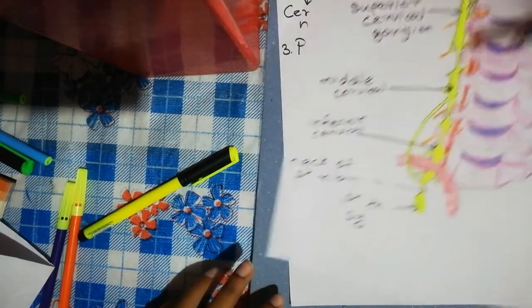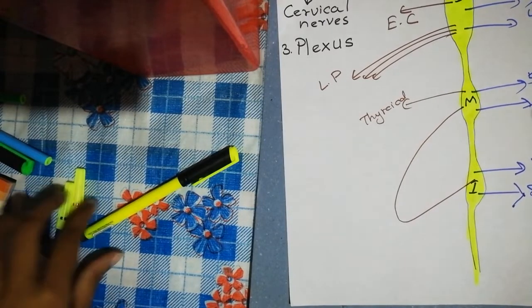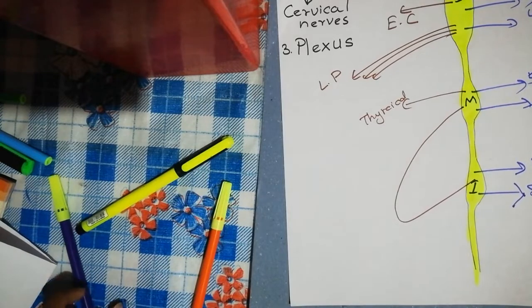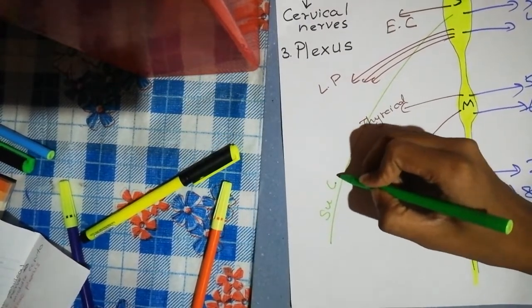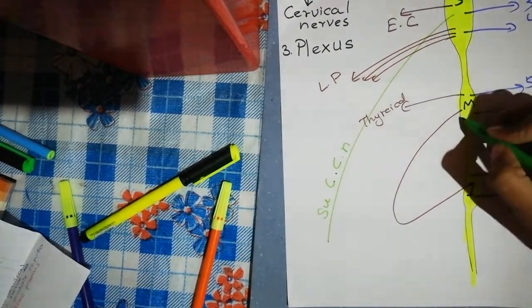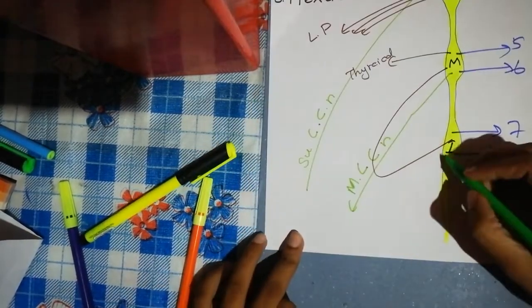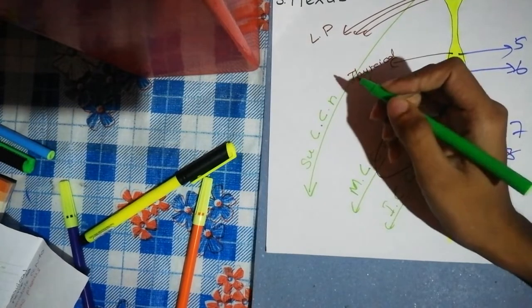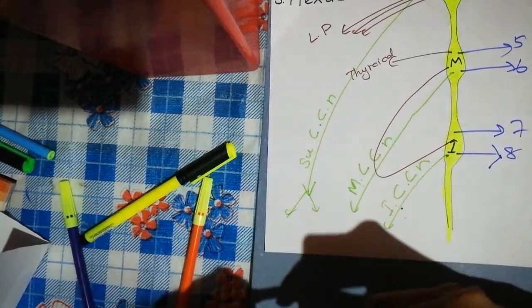Cardiac branches go to the cardiac plexus: the superior cervical ganglion gives the superior cervical cardiac nerve, the middle gives the middle cervical cardiac nerve, and the inferior gives the inferior cervical cardiac nerve. On the left side, the superior cardiac nerve goes to the superficial cardiac plexus; on the right side, and the middle and inferior, they go to the deep cardiac plexus.